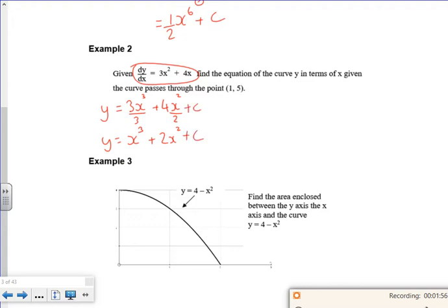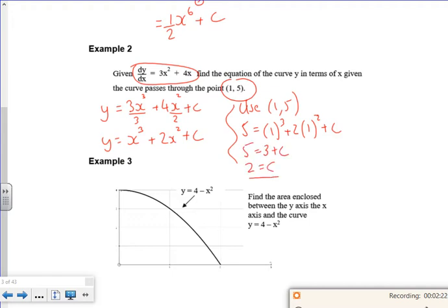With that now, that gives me an infinite amount of curves all on top of each other. I need to fix it through the point 1 comma 5. So 5 is 1 cubed plus 2 times 1 squared plus c. So 5 is 3 plus c, so c is 2. I need to make sure I write the final answer with the correct equation: y equals x cubed plus 2x squared plus 2. That's example 2 done.